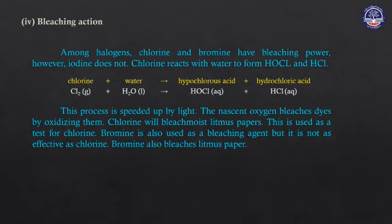Bromine in terms of chlorine: chlorine reacts with hydrogen to form HCl — hydrochloric acid. HCl has a nitrogen atom in terms of oxygen.